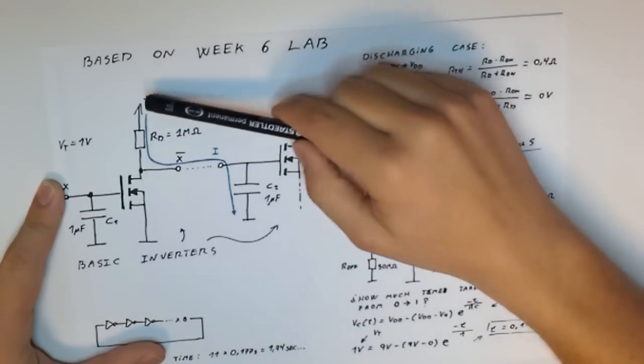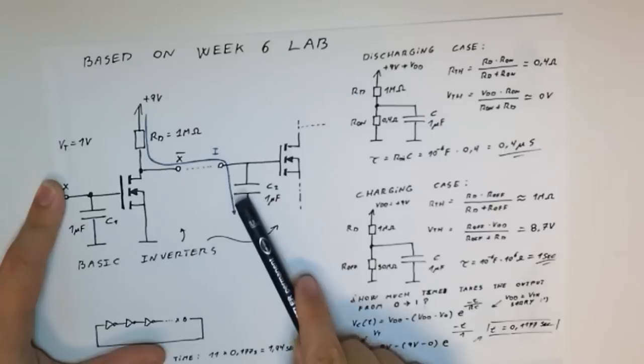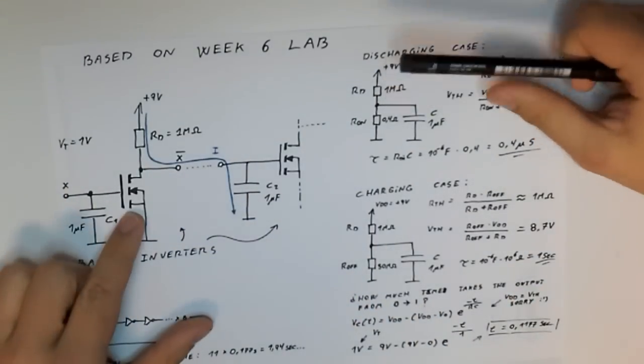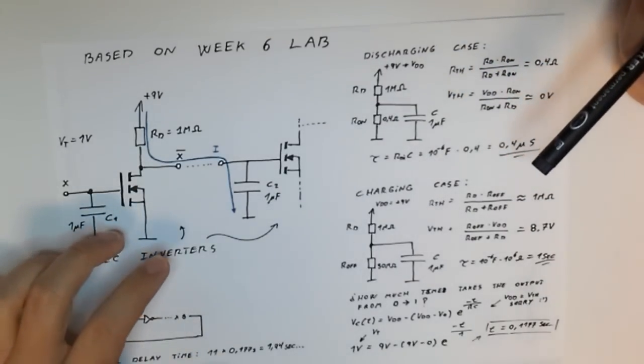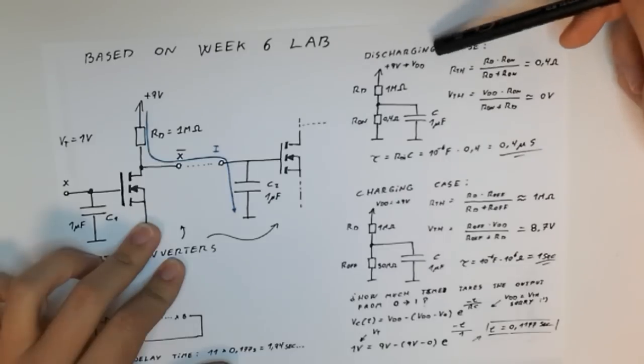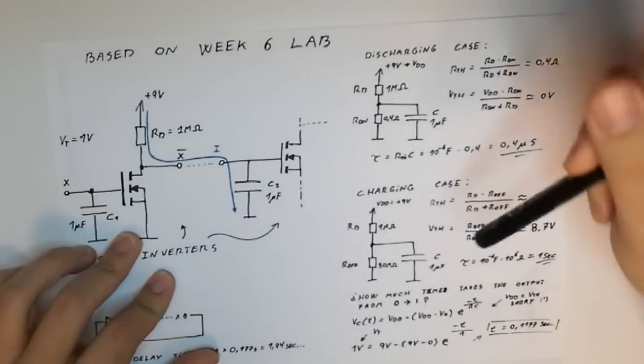Because the Ron of these transistors is very small, the time constant for this charging case is very small as well, so we can neglect that and think that this capacitor is going to be discharged instantaneously through this transistor.